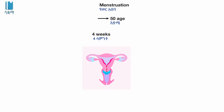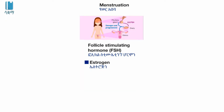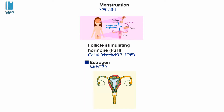The menstrual cycle involves a follicle stimulating hormone. The ovary stimulates estrogen, which is a hormone. The endometrium is related to endometriosis. In ovulation, the ovary releases into the fallopian tube. The estrogen hormone is related to the progesterone hormone.